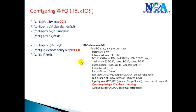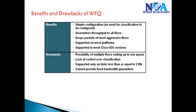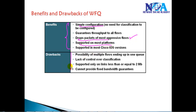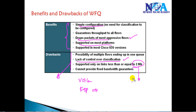More advanced queuing mechanisms like class-based weighted fair queuing and low latency queuing will be covered in the next session. Currently, we've covered default fair queuing and weighted fair queuing without traffic classification by class. The major advantage of fair queuing is simplified configuration and aggressive large-packet flows being dropped during congestion, and it's supported on most platforms. However, the drawback is lack of control over classification — traffic like voice and FTP is not manually differentiated. Weighted fair queuing is only supported on low-speed links and cannot guarantee fixed bandwidth for voice or video traffic.